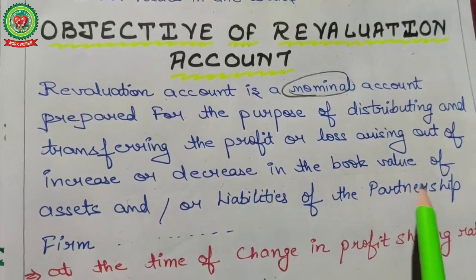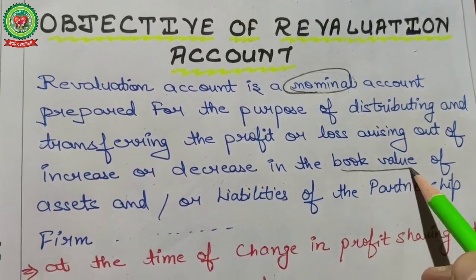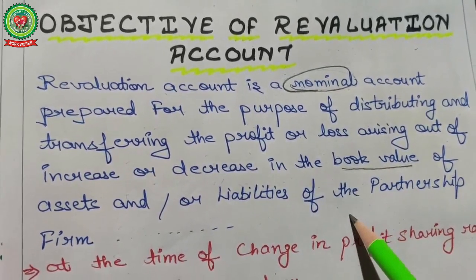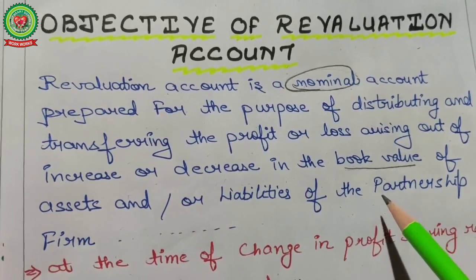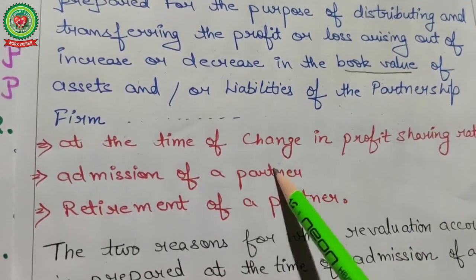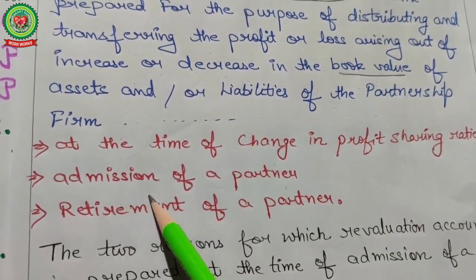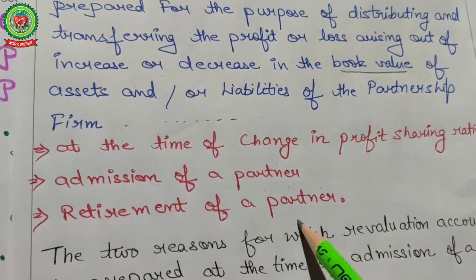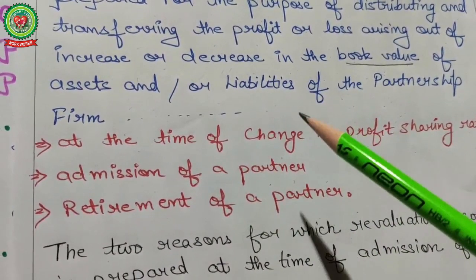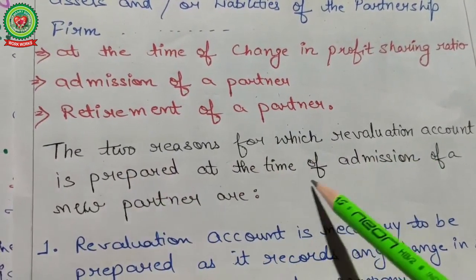The revaluation account is prepared for the purpose of distributing and transferring the profits or losses arising out of increasing or decreasing in the book value of assets or liabilities of the partnership firm. Book value means when you purchase a particular asset, the monetary value of that asset at that time is considered as book value. We maintain the revaluation account at the time of change in profit sharing ratio, admission of a partner, and retirement of a partner.